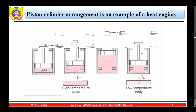Examples of heat engines: a piston-cylinder arrangement is an example of a heat engine. Gas expands by adding heat, reaches a new state, rejects heat to the low temperature sink, and returns to its original state. By doing this, we get work and the thermodynamic cycle is completed.